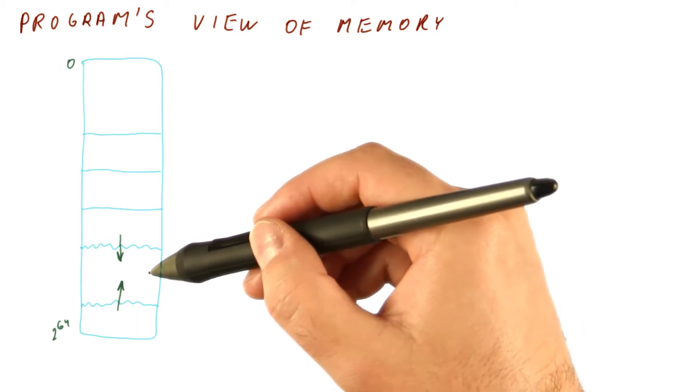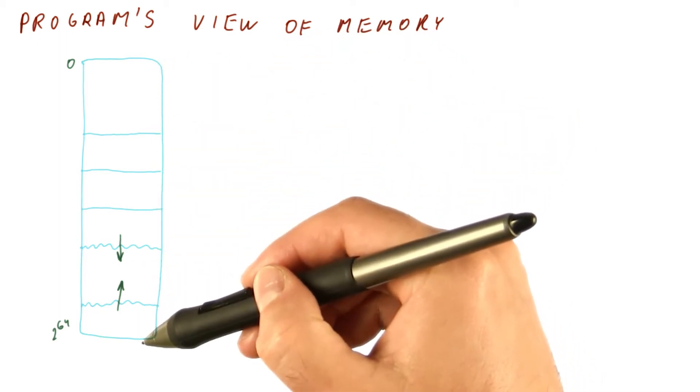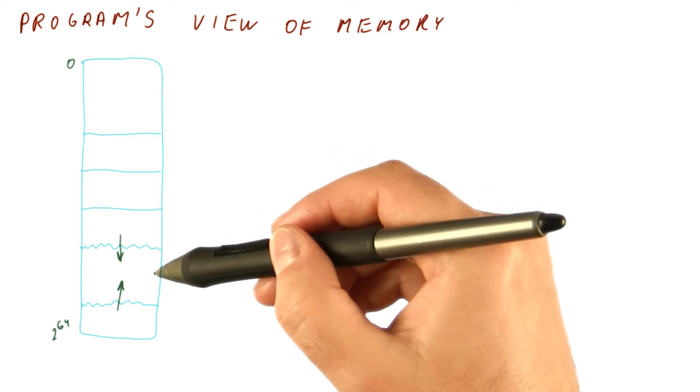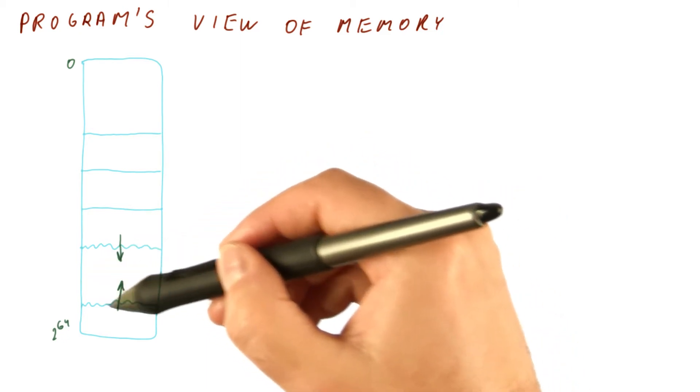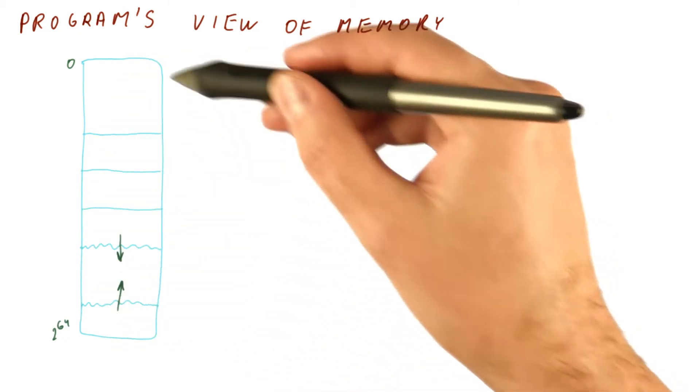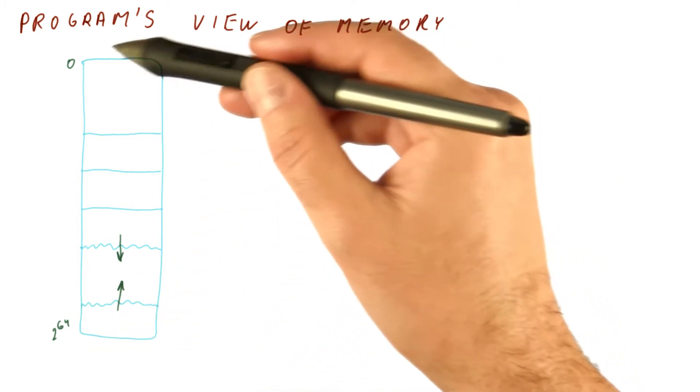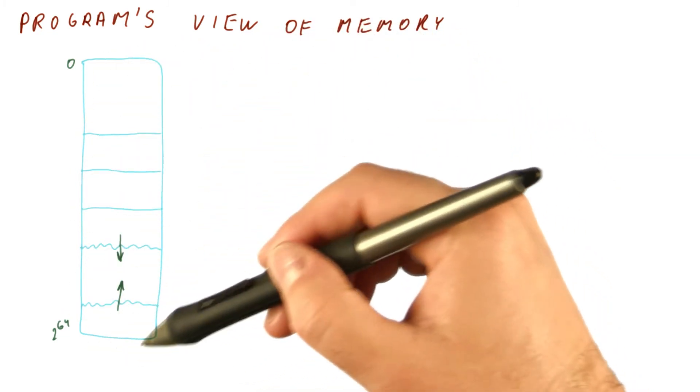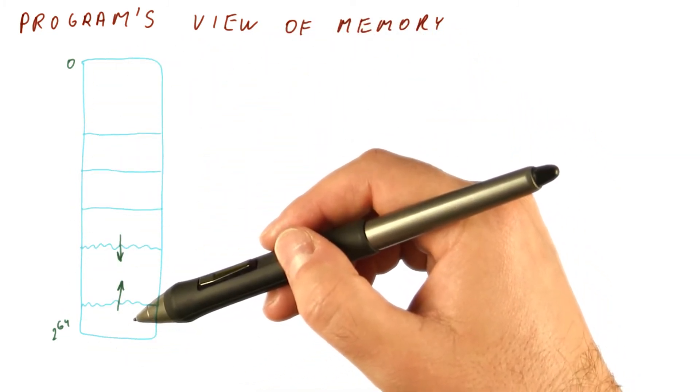So what happens is the program thinks it has a lot of memory, but in reality most of that memory it will never access. And this is what we call virtual memory. So the program virtually has a lot of memory, but in practice there isn't that much memory.